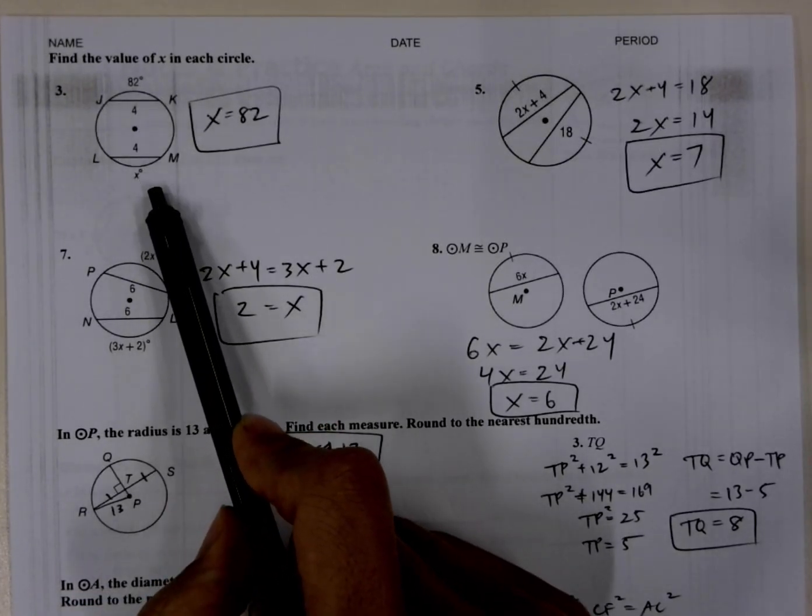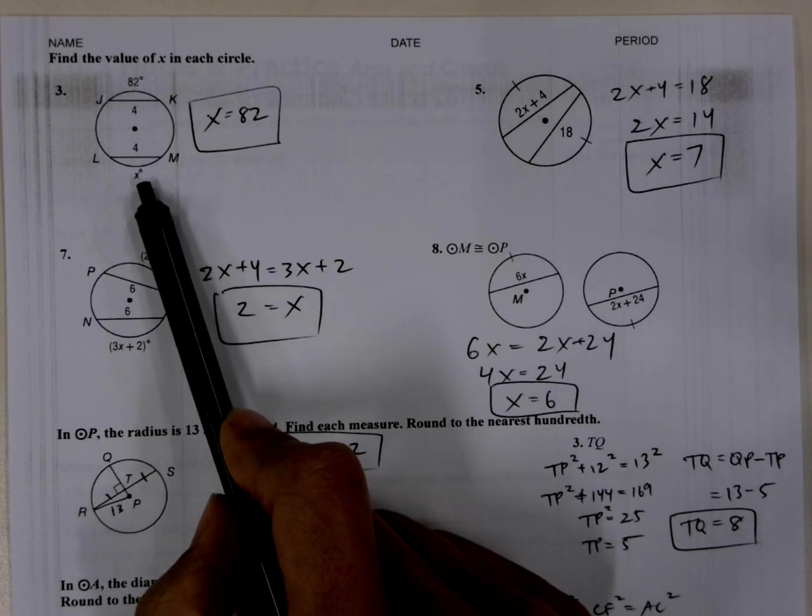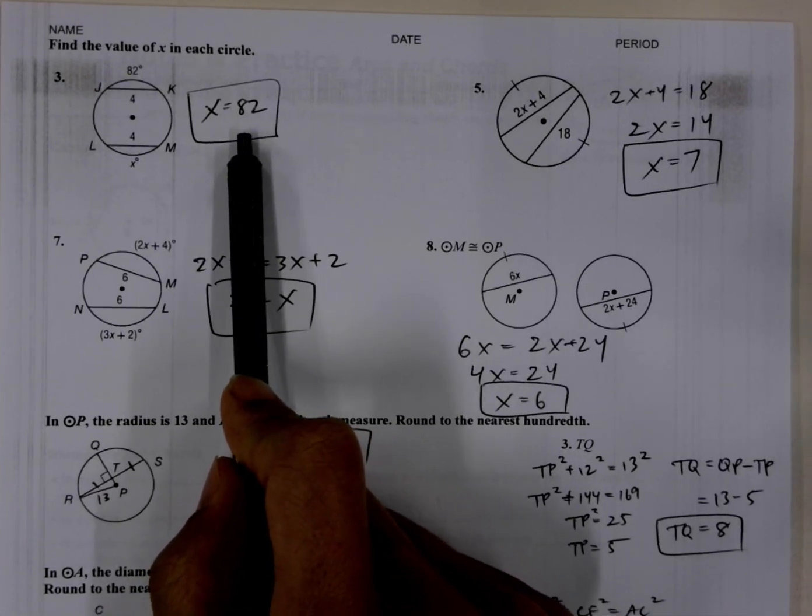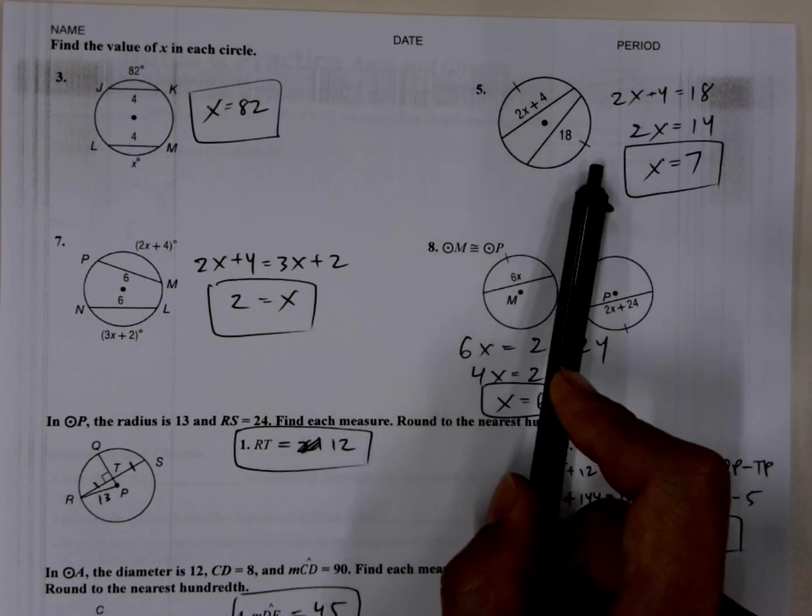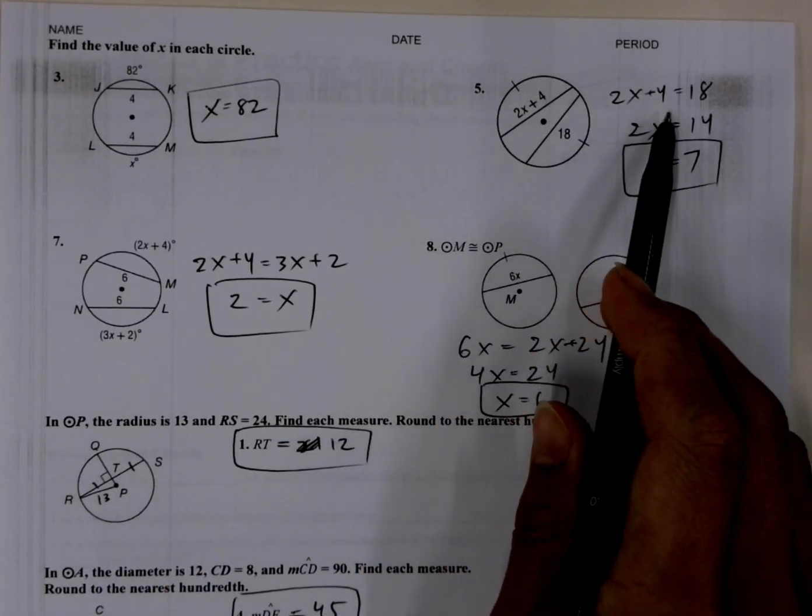We know the chords are congruent here, so that means that the arc measures are also congruent, so we could set them equal to each other. We know here the arc measures are congruent, so we know that the chords are congruent, so we could set them equal to each other.